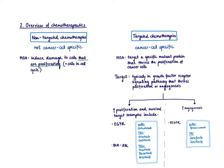Other examples of targeted chemotherapies include drugs targeting the BCR-ABL fusion protein at translocation or the VEGF receptor. Listed here are the tyrosine kinase inhibitors that target the BCR-ABL translocation, and also an antibody and tyrosine kinase inhibitors that target the VEGF receptor.